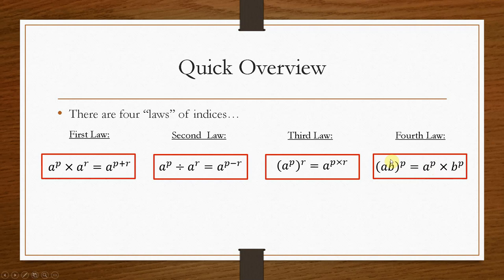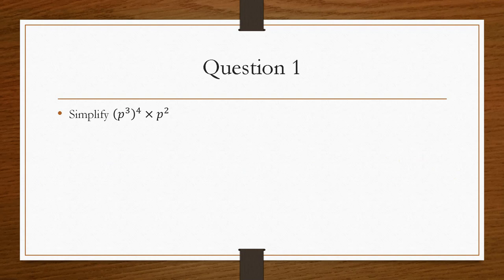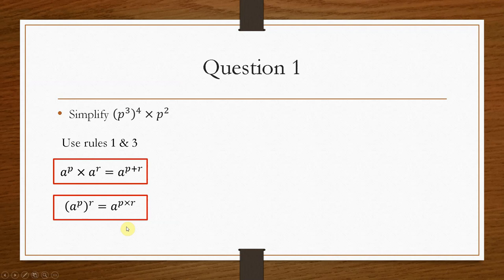So if we have a look at question one. Question one asks us to simplify p cubed to the power 4 times p squared. So in this example, we have to use rules 1 and 3 from before.